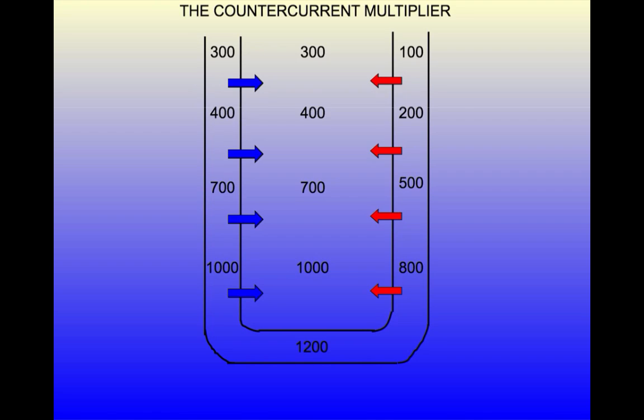The job of the counter-current multiplier is to create and maintain a hypertonic medullary interstitial gradient with increasing osmolality towards the bottom of the loop as depicted by the shading here.